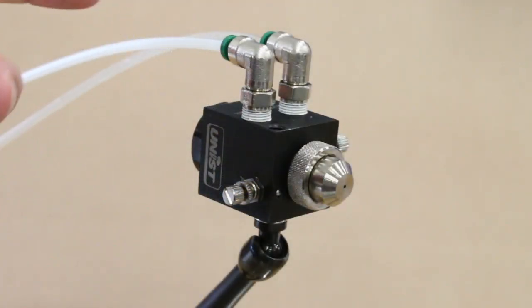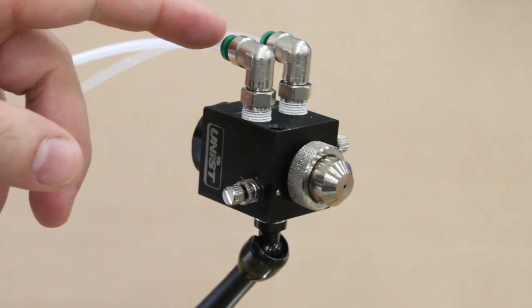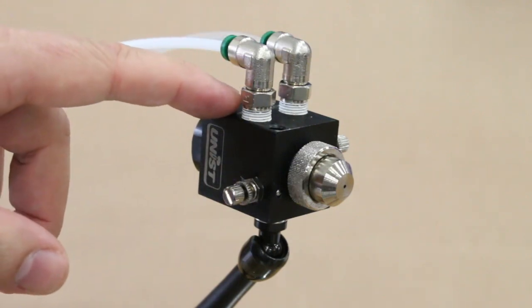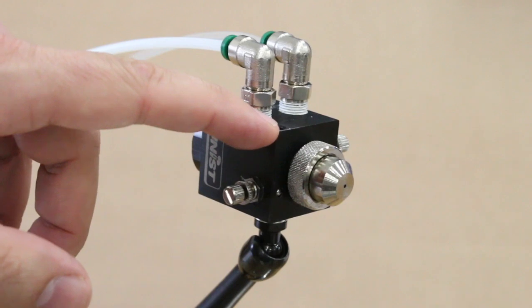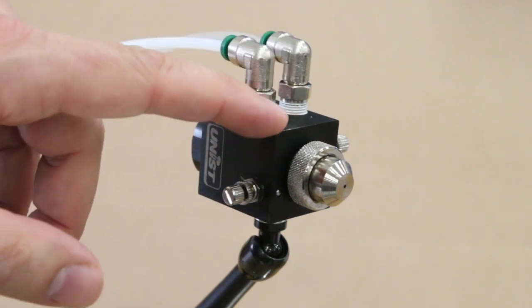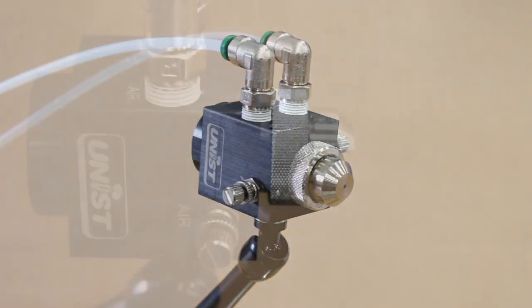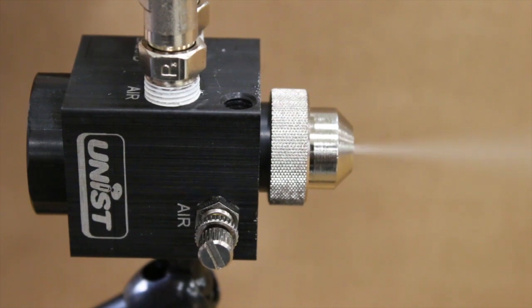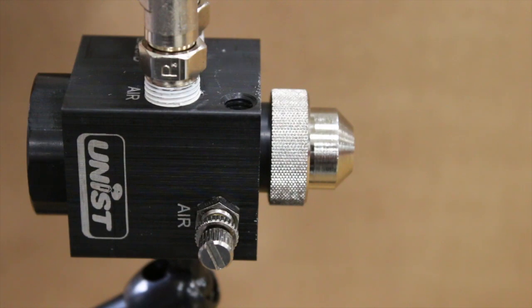The LV nozzle is actuated primarily with an air signal. The air signal moves the internal valving so that the liquid flows and at the same time the air flows out the nozzle. Now, when the signal is present, it's immediately on. When the signal is off, it immediately shuts off. So it's very precise in how it's controlled.